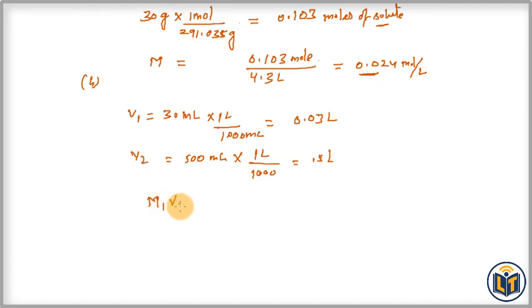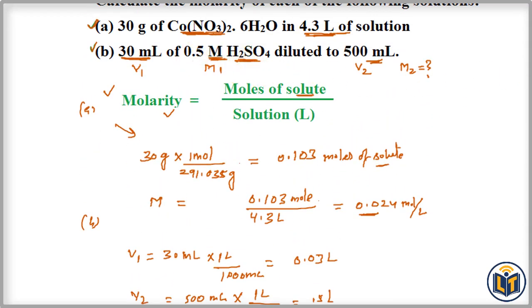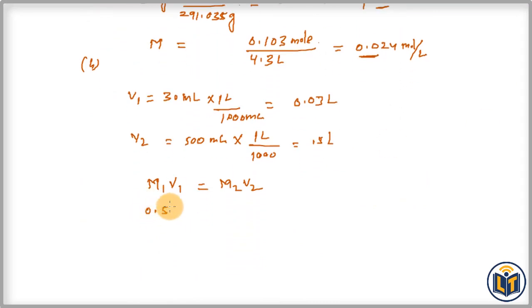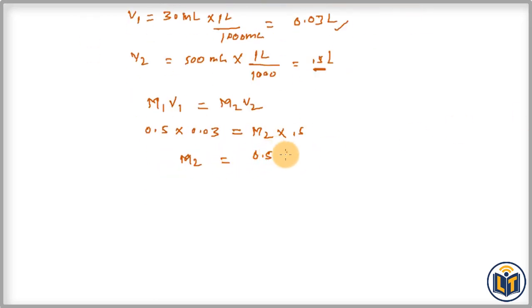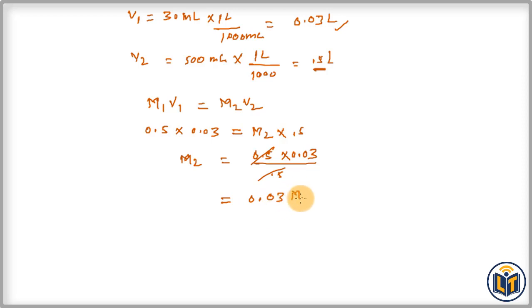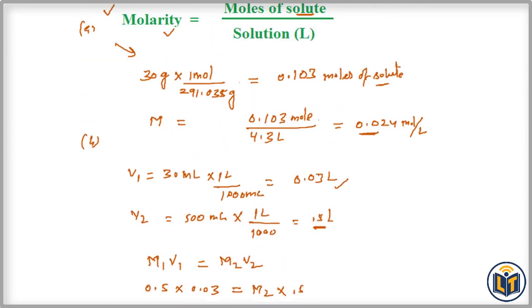Applying the formula: M1 is 0.5, V1 is 0.03 liters, equals M2 times V2 which is 0.5 liters. Solving for M2: 0.5 multiplied by 0.03 divided by 0.5 — the 0.5 values cancel — giving M2 equals 0.03. This is the molarity of the diluted H2SO4 solution.